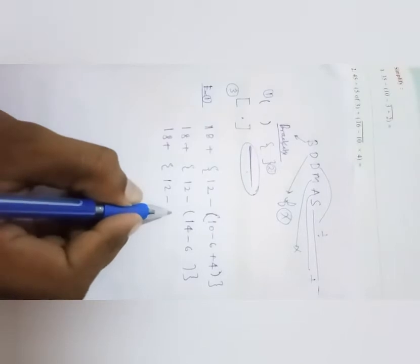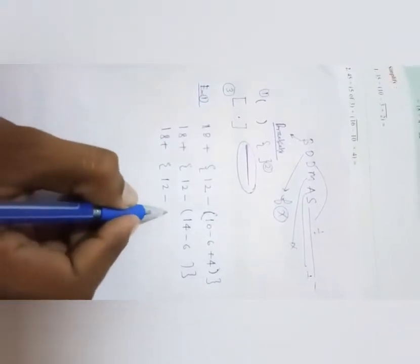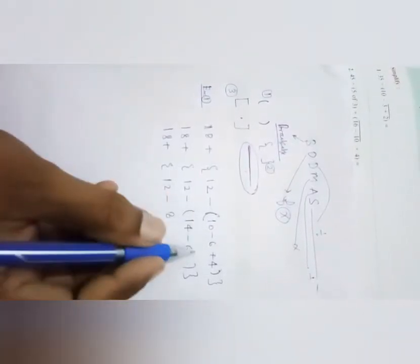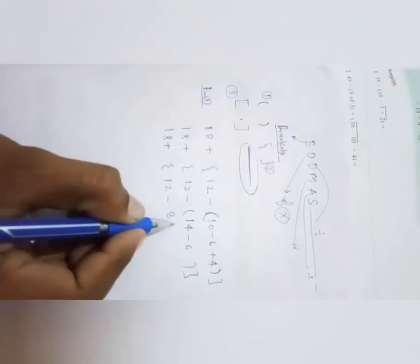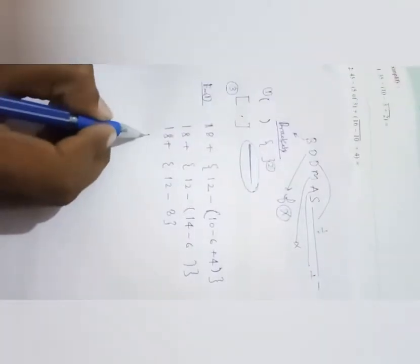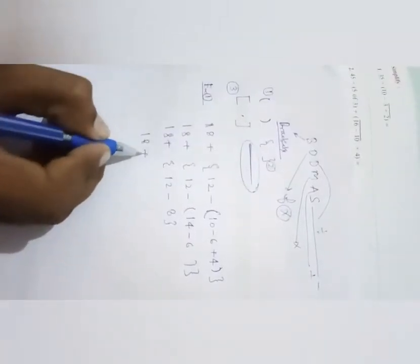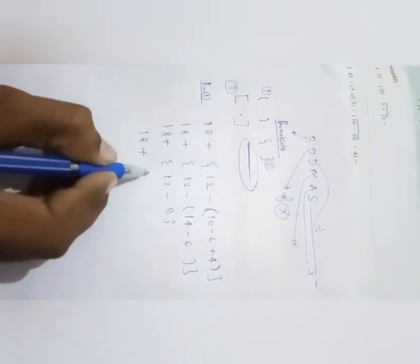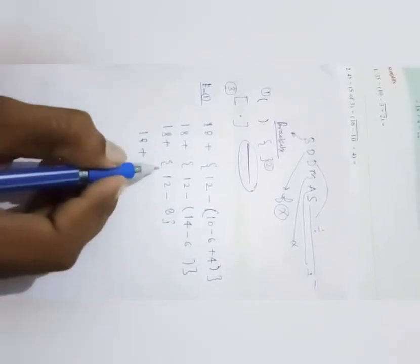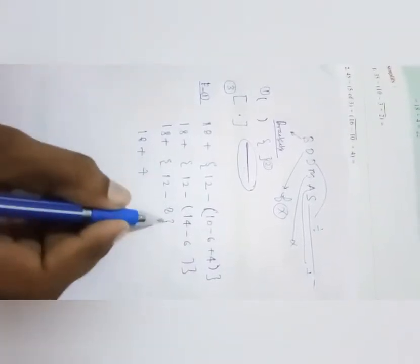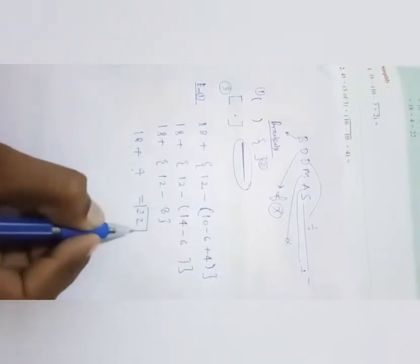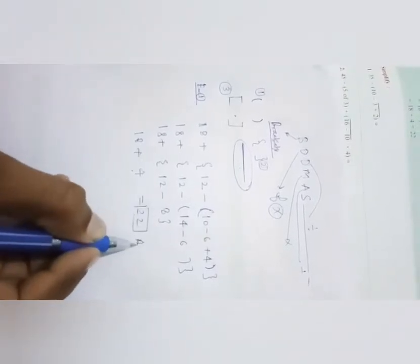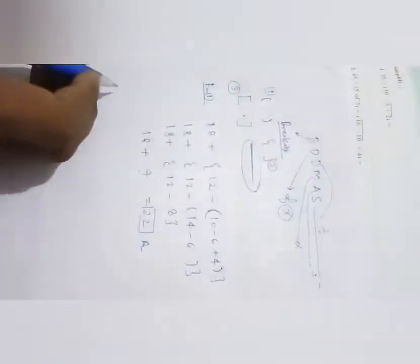So you get 18 + {12 − (14 − 6)}. Now 14 − 6 = 8, so the small bracket is solved: 18 + {12 − 8}. Now 12 − 8 = 4, so the curly bracket is solved: 18 + 4 = 22. So 22 is the answer.